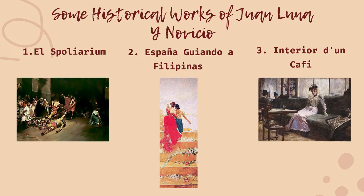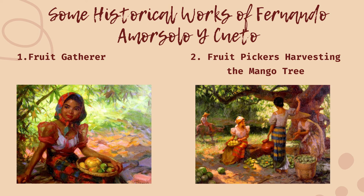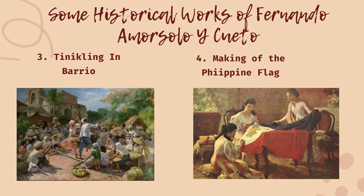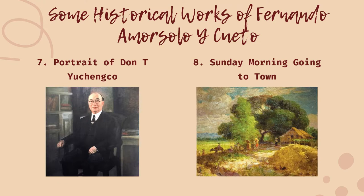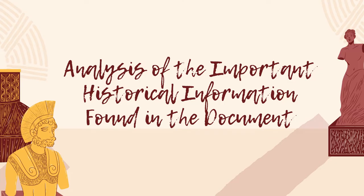Some historical works of Juan Luna y Novicio include: first, El Spolarium; second, España y Filipinas; and third, Interior Done Cafe. Some historical works of Fernando Amorsolo y Cueto include: first, Fruit Gatherer; second, Fruit Pickers Harvesting the Mango Tree; third, Tinikling in Barrio; fourth, Making of the Philippine Flag; fifth, Nude; sixth, Palai Maiden; seventh, Portrait of Don T. Yachenko; and eighth, Sunday Morning Going to Town.